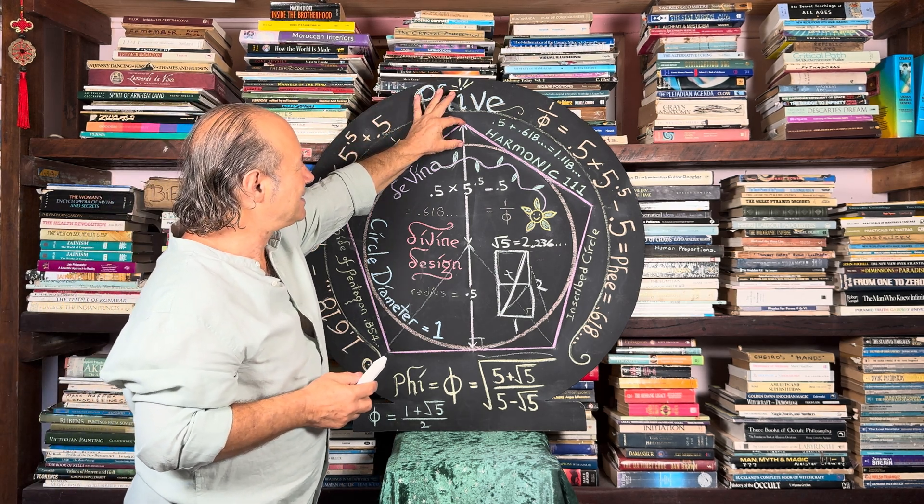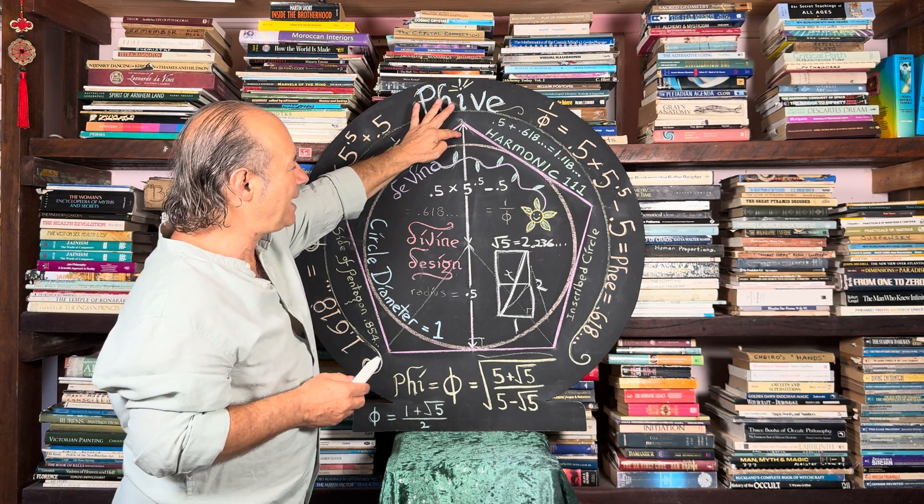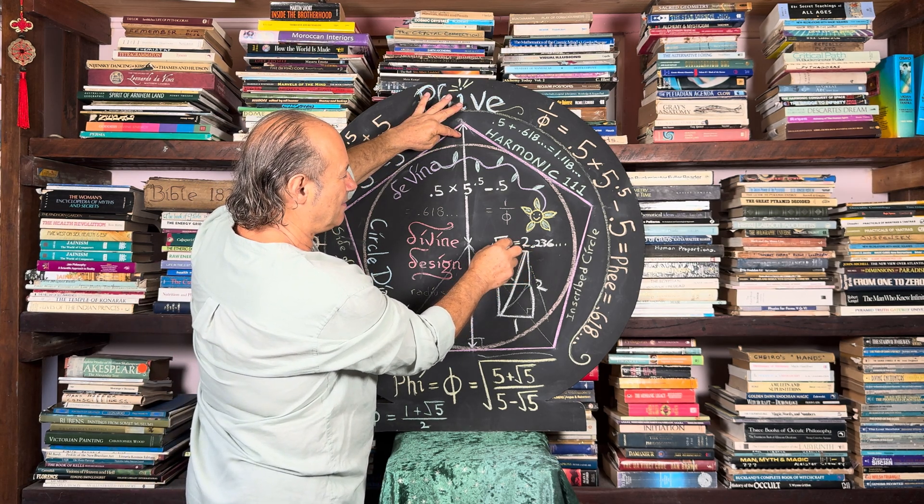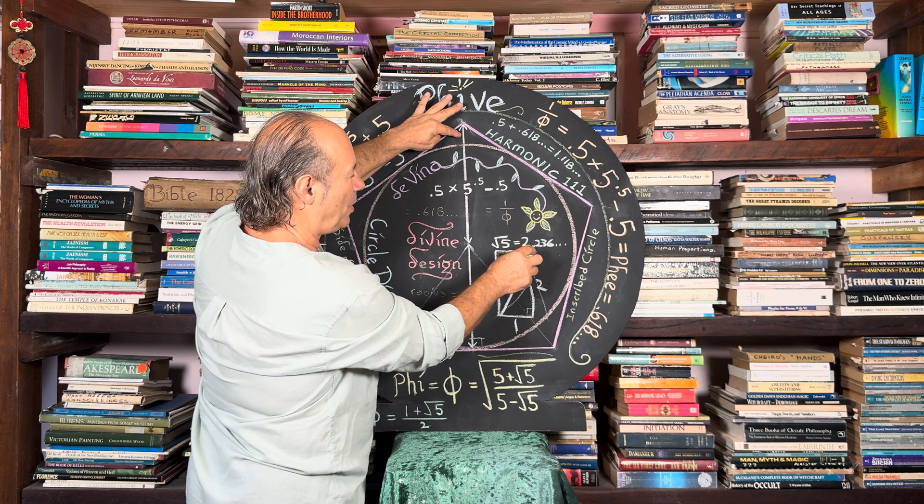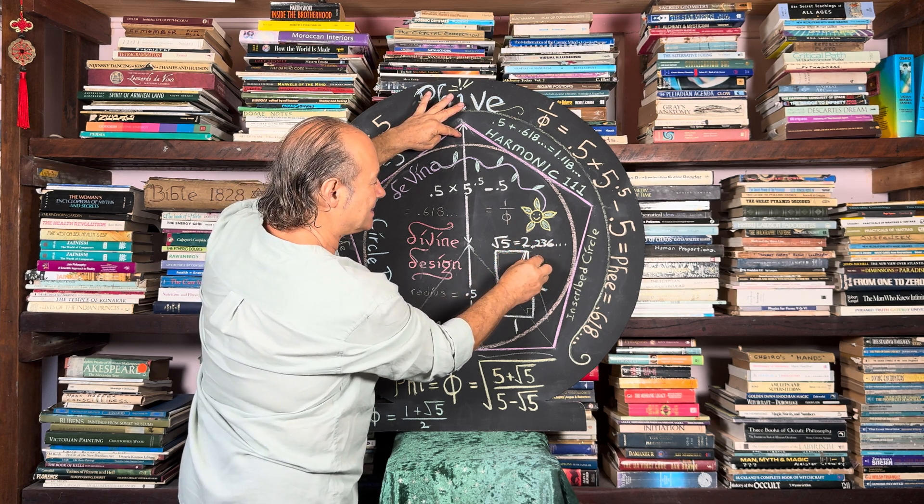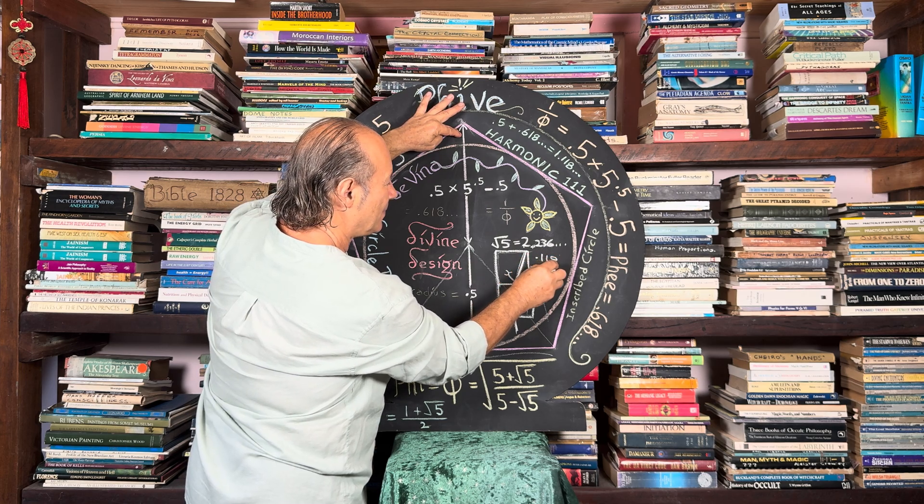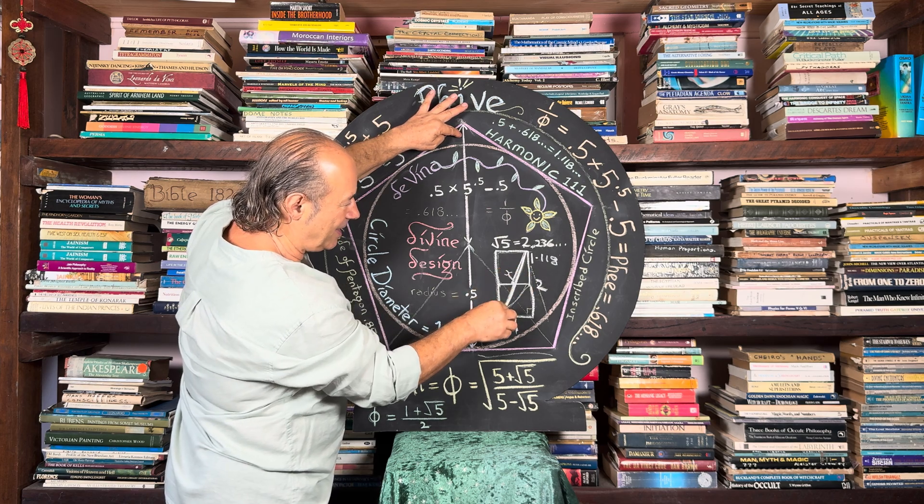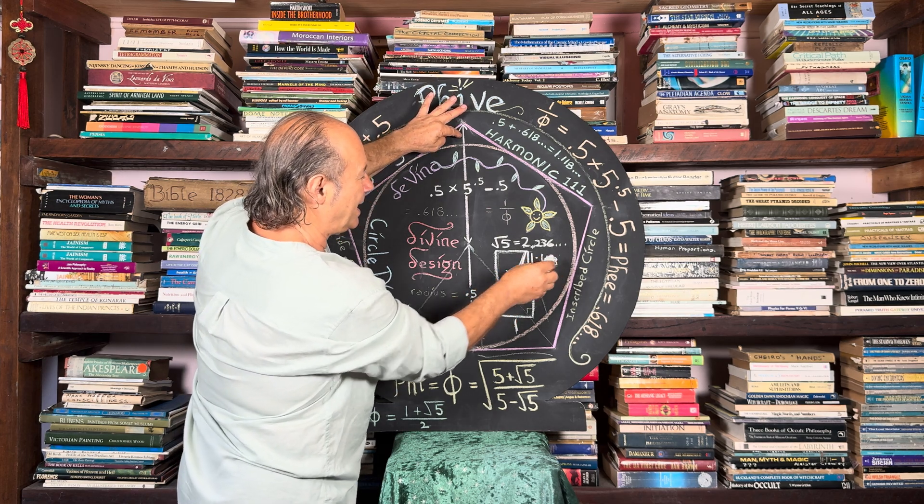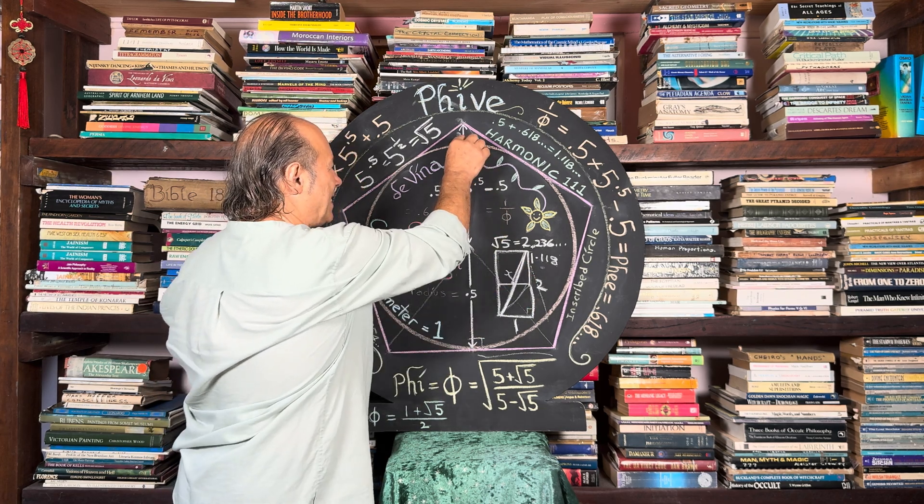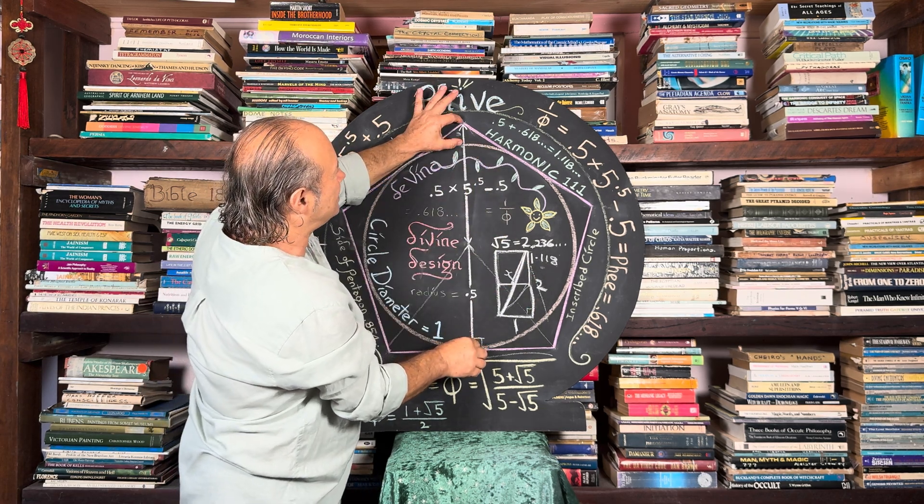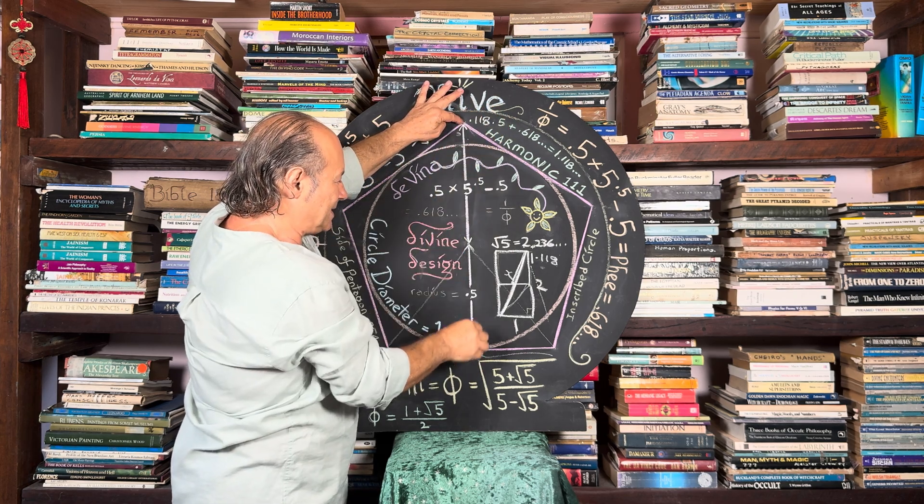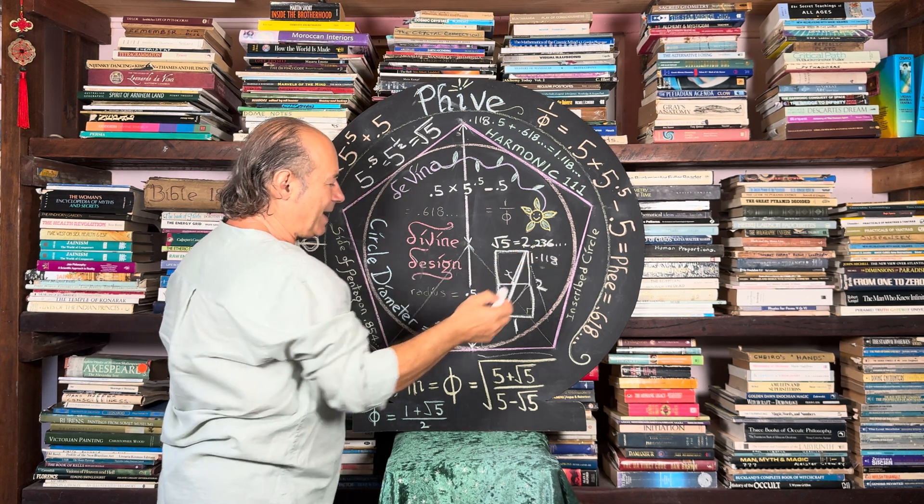We can now calculate that this distance is 0.118 because half of root 5, if we divide root 5 by 2, it's 1.118. And that distance here, 0.118, half of root 5, this distance here from there or there is 1.118. And you can see here that we take away the 1 from here, and that tells us that this distance here is 0.118. And that whole vertical distance, this whole distance of 1.118, we call it harmonic 1.111.